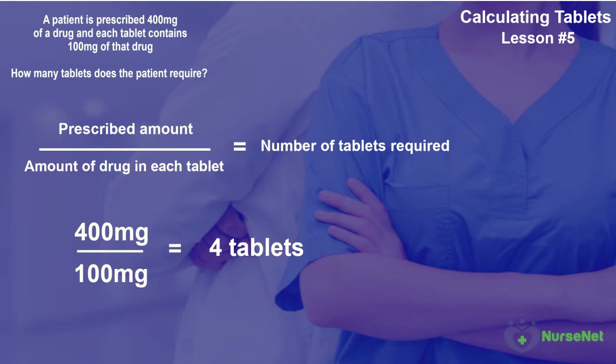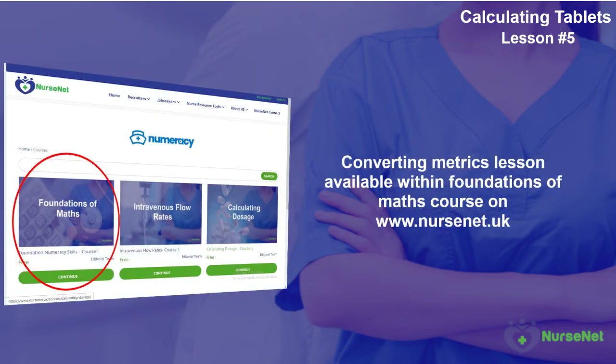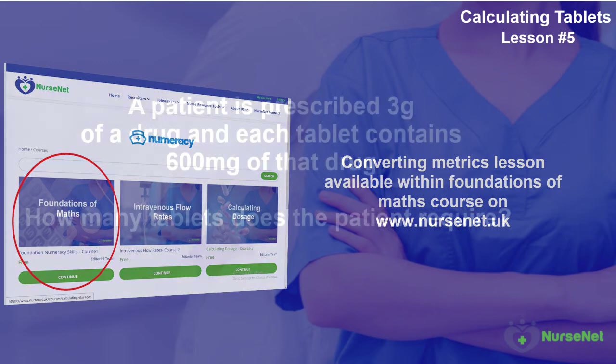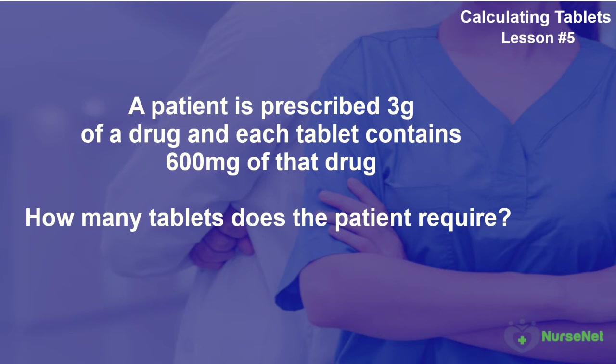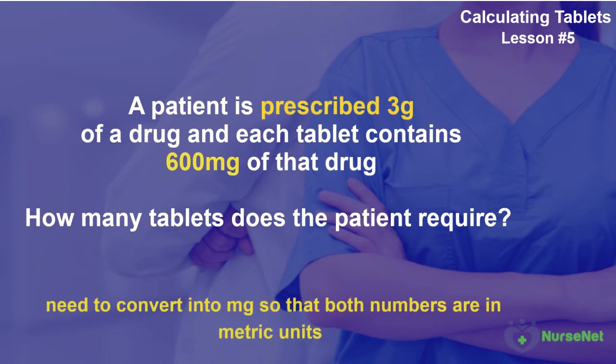What if the prescribed amount is not in the same metric units as the amount of drug in each tablet? Referring back to what we already know on converting metrics, we can apply exactly the same approach here. For example, a patient is prescribed 3g of a drug, and each tablet contains 600mg of that drug. We can see the prescribed amount is in grams, and we need to convert this into milligrams using our conversion factor of 1,000.